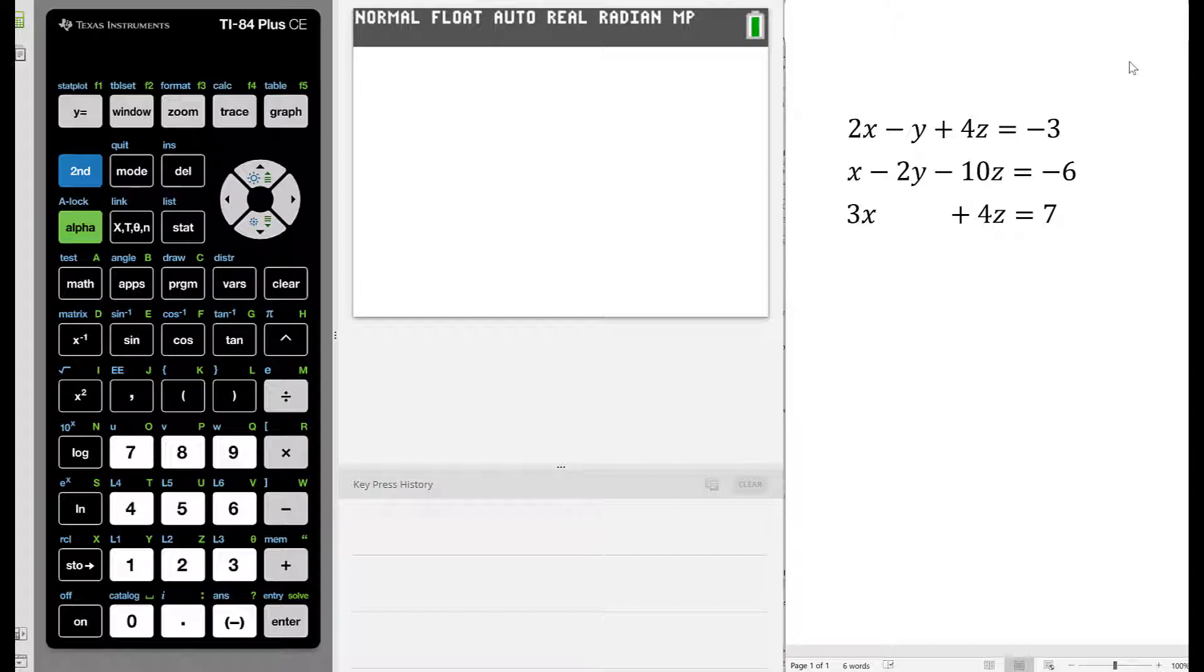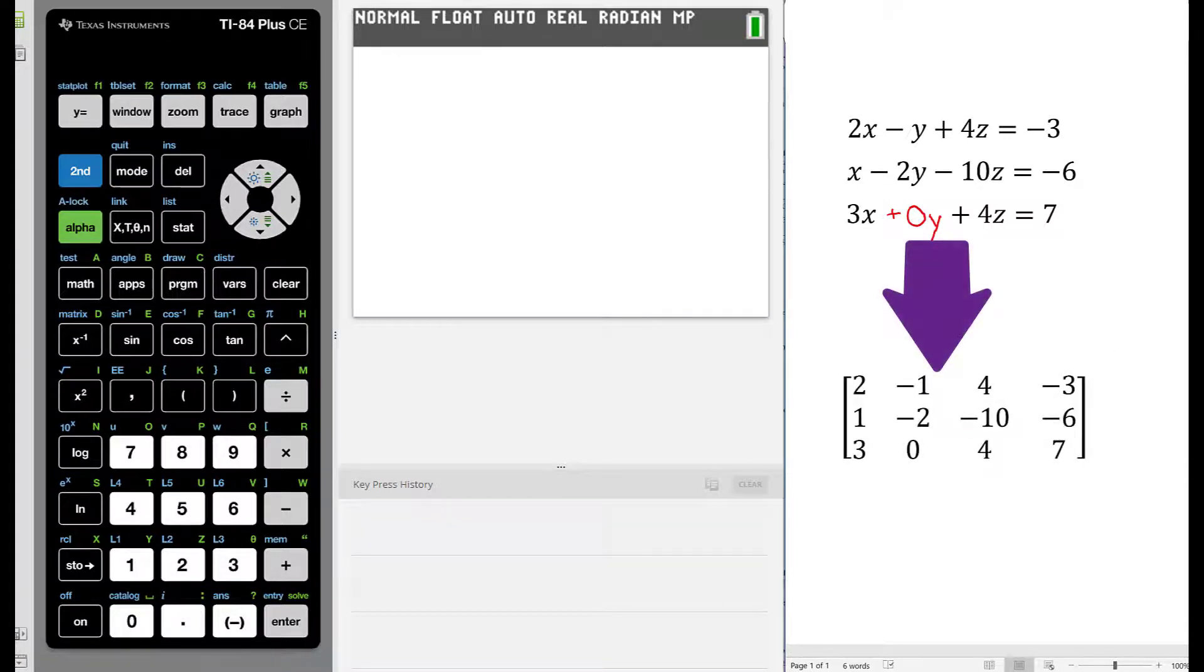We will be writing our system as an augmented matrix and inputting it into the graphing calculator. In order to do that, I'm going to write in the y term for the last equation as plus 0y, since we need to know the coefficients of all of our variable terms.